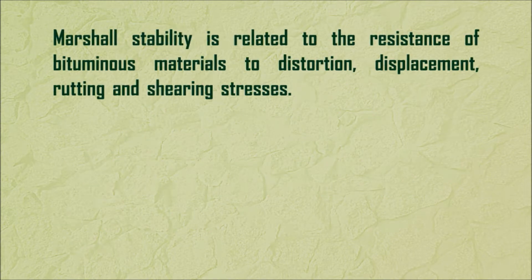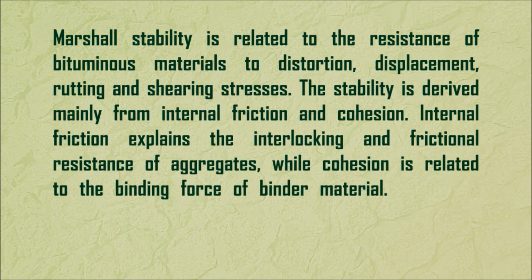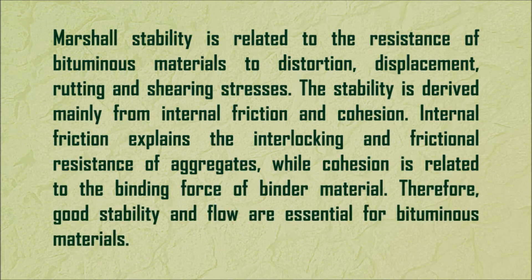Marshall Stability is related to the resistance of bituminous materials to distortion, displacement, rutting, and shearing stresses. The stability is derived mainly from internal friction and cohesion. Internal friction explains the interlocking and frictional resistance of aggregates, while cohesion is related to the binding force of binder material. Therefore, good stability and flow are essential for bituminous materials.